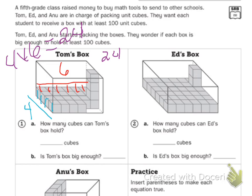Now, I need to know how tall it is. So, I'm looking at these cubes right here. 1, 2, 3, 4. So, 24 times 4. 4 times 4 is 16. Carry my 1. 4 times 2 is 8, plus 1 is 96. So, how many cubes can it hold? Will it hold at least 100? So, it needs 100 cubes. No, Tom's box is not big enough.